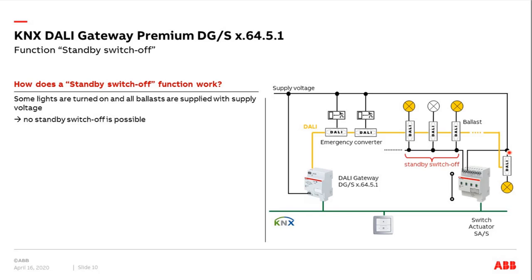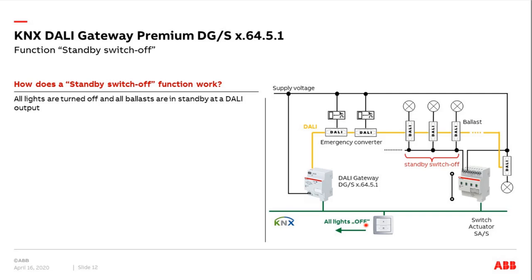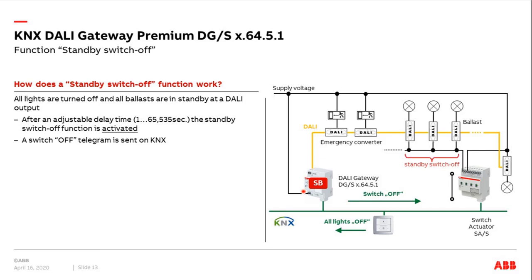In principle, it makes sense to switch the supply voltage of all the ballasts. When some lights are on, the standby switch-off function cannot be activated. When we press the rocker and switch off all the lights — all 64 ballasts are now switched off — then after a delay time adjustable in the ETS parameters (for example between 1 and 65,000 seconds, which is about 18 hours), the DALI gateway activates the standby switch-off function.